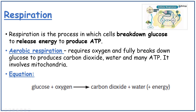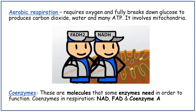Respiration is a process in which cells break down glucose to release energy and produce ATP. Aerobic respiration requires oxygen and fully breaks down glucose to produce carbon dioxide, water, and lots of ATP. The equation is: glucose plus oxygen goes to carbon dioxide plus water plus energy. It involves mitochondria and coenzymes.